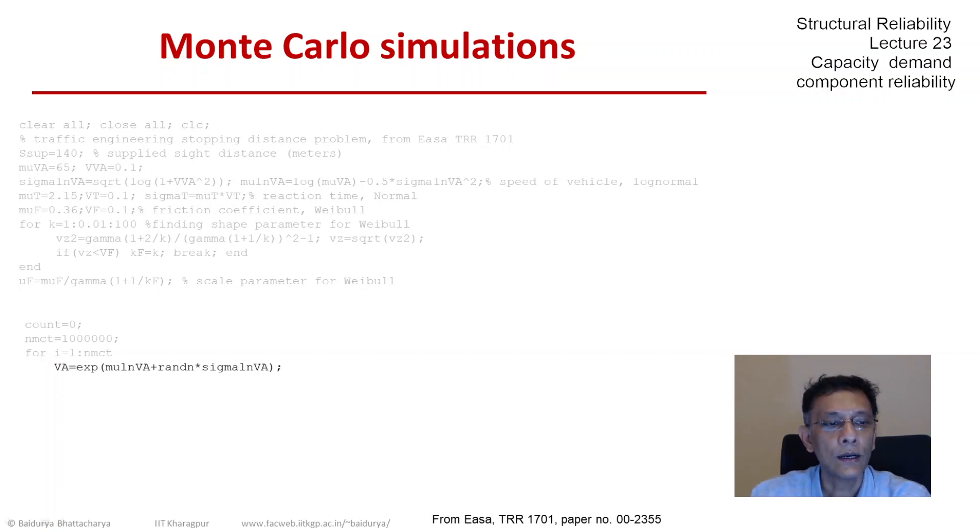So we first generate the V_A, the speed, which is a lognormal random variable. So we first generate the standard normal rand n and then scale that with sigma log and then add the mean log and exponentiate the whole thing. That gives us a lognormal V_A.